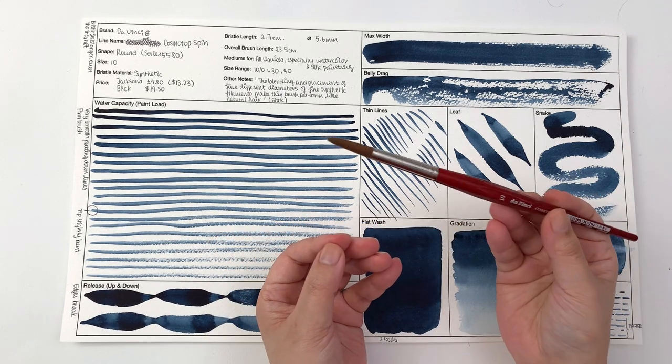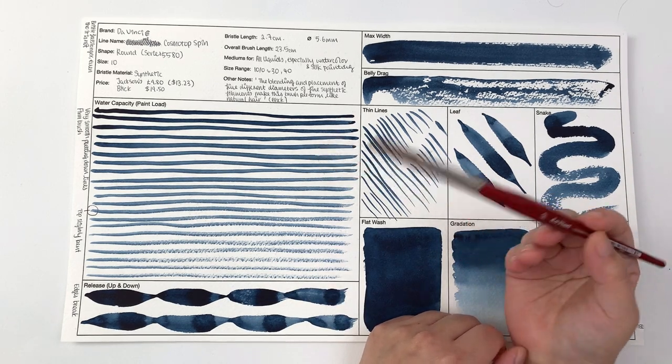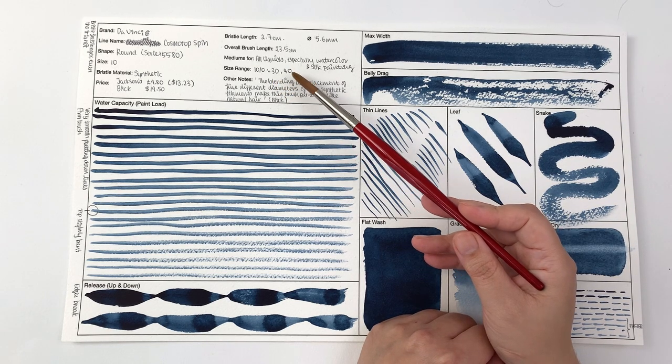Silk painting is new; normally they don't say silk painting but for this one they do say that. The size ranges from 10/0 to 30 and then they also have a 40.